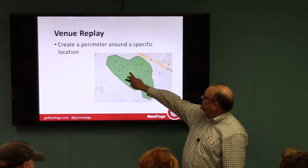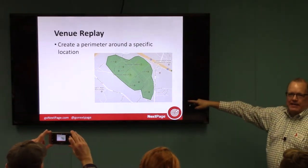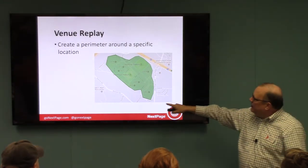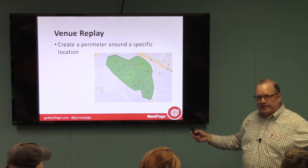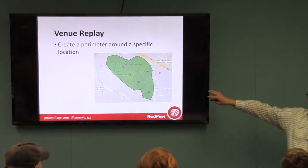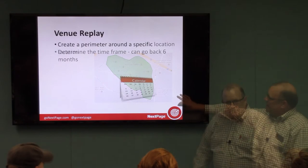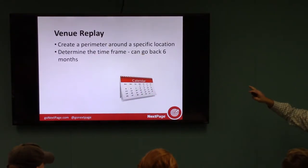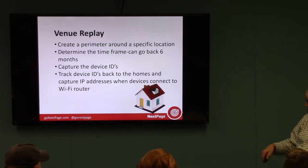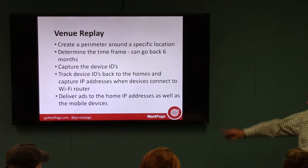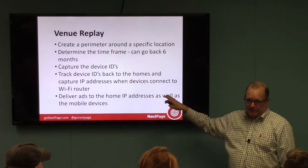We create a perimeter around a specific location — here it's Arrowhead, including the parking lots where fans tailgate and browse ESPN.com. We can set this specifically by date, one specific game, even down to the time. Or for five home games over a six-week period, you can capture everyone in that geofence for the whole period — as long as there's no U2 concert in between. We can go back up to six months, though data quality degrades past that. We capture device IDs, track them home, capture the IP addresses when devices connect to Wi-Fi, and then deliver ads to both the IP address and mobile devices.